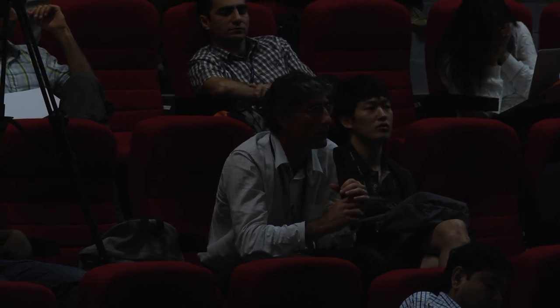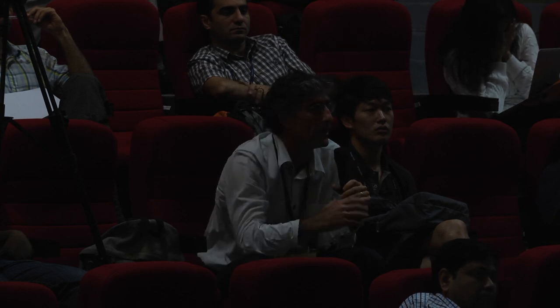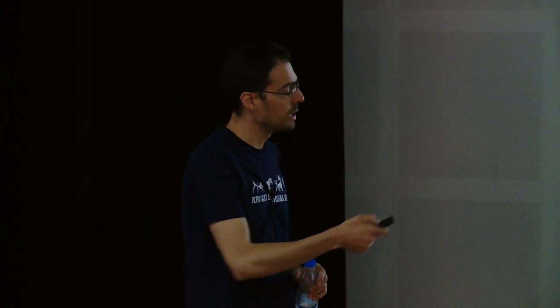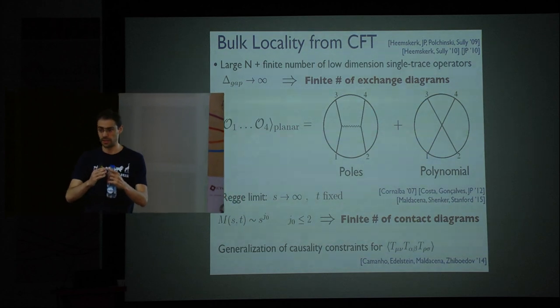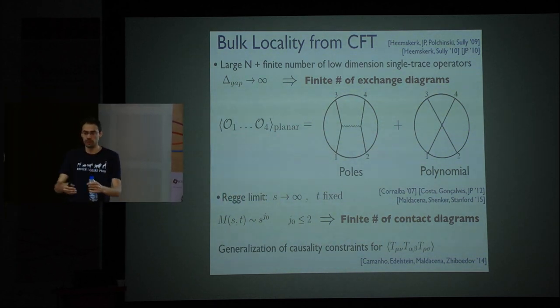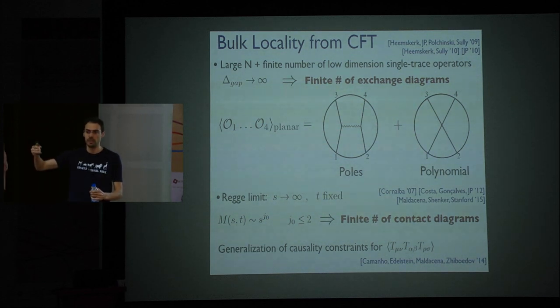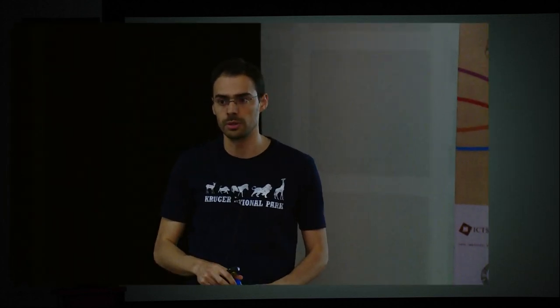Q: In the large N limit for N=4, you have a large number of finite-dimensional operators — for large N you have an infinite number of low-dimensional operators. A: You're saying large N and strong coupling. Here I made the argument with a finite number, but that's because I'm trying to derive a local theory just in ADS. In N=4, you don't get a local theory just in ADS — you get a local theory in ADS₅ × S⁵. So these infinite numbers are just the Kaluza-Klein modes on S⁵.